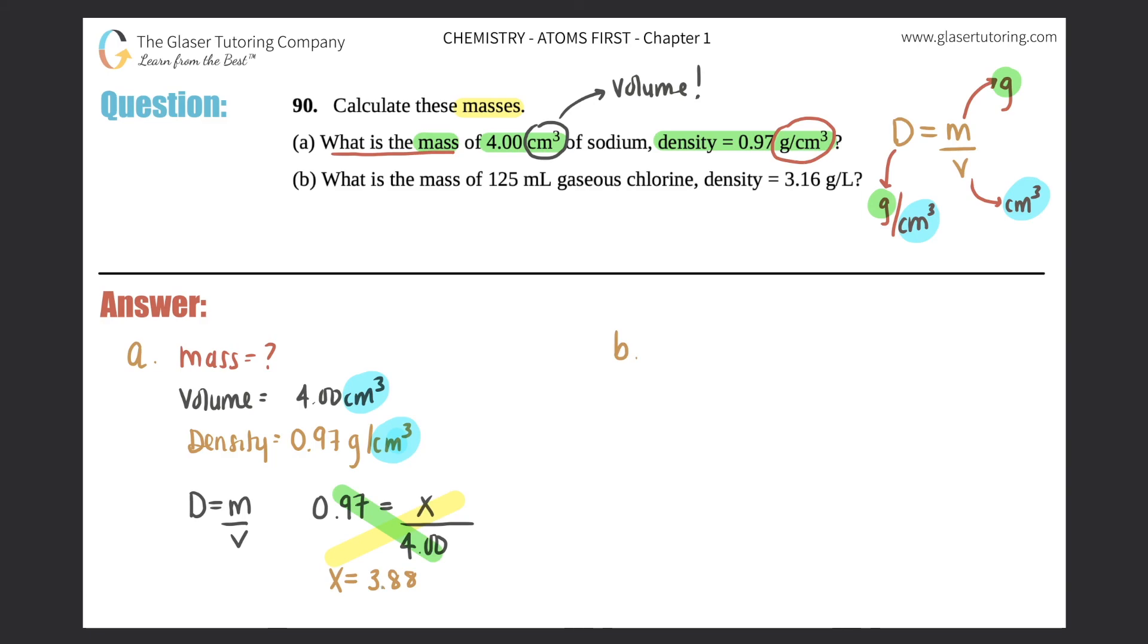But now you guys should know your sig figs by now. If you don't, go back to the previous questions. There's tons of them. So here, this one, there's two sig figs, because remember, leading zeros never count. This is a leading zero. And in here, there's three sig figs, because these are trailing zeros. Trailing zeros only count when you see a decimal.